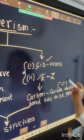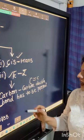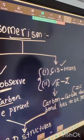Whereas if you want to observe cis-trans and E and Z isomerism, it is mandatory that you have a carbon-carbon double covalent bond.